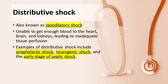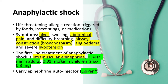Distributive shock, also known as vasodilatory shock, is characterized by the impaired distribution of blood flow and excessive vasodilation. In this type of shock, the body is unable to get enough blood to the heart, brain, and kidneys, leading to inadequate tissue perfusion. Examples of distributive shock include anaphylactic shock, neurogenic shock, and the early stage of septic shock.